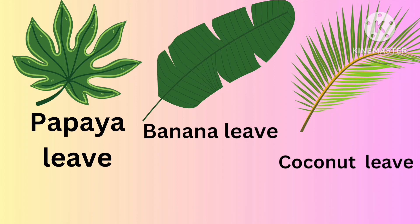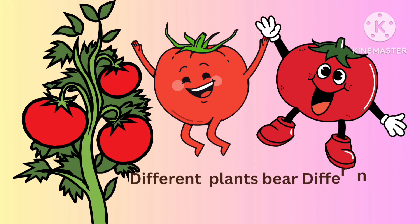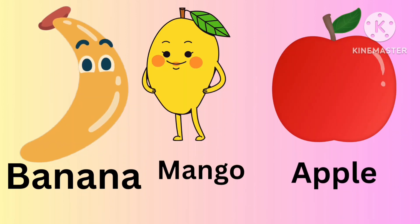Some examples of leaves are papaya leaf, banana leaf, and coconut leaf. Different plants bear different kinds of fruits.